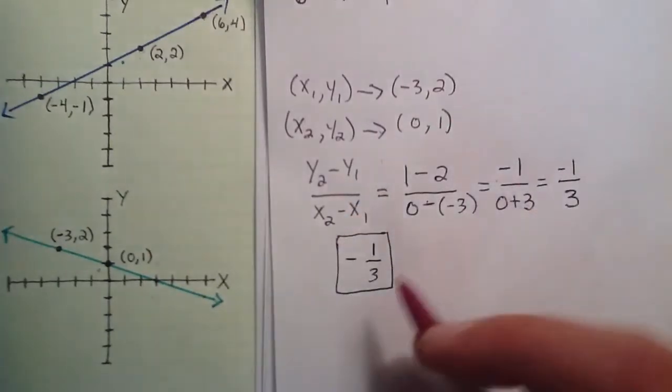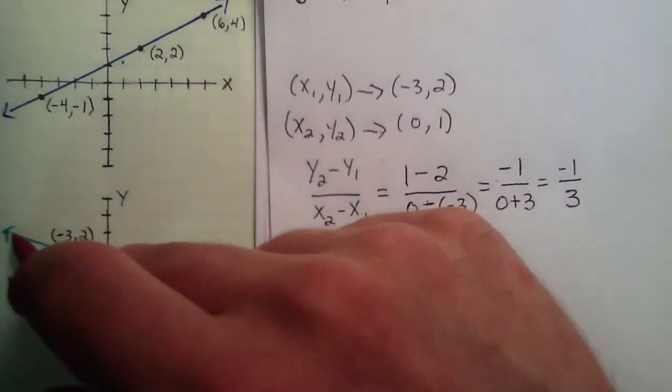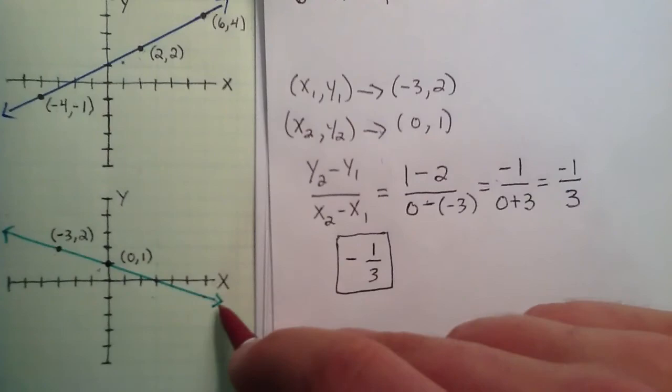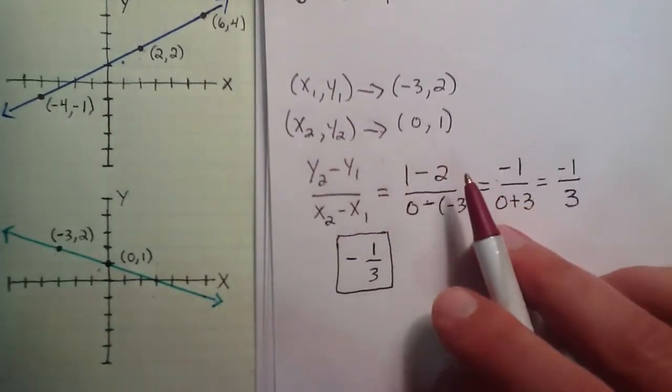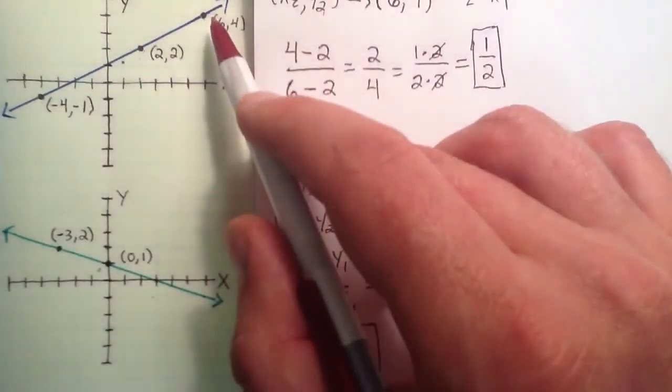So notice that we have a negative slope in this case. Any time you have a negative slope, that reflects a line that decreases as it goes to the right. And any time you have a positive slope, it's a line that increases as it goes to the right.